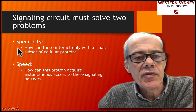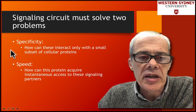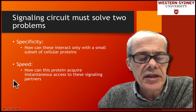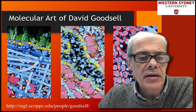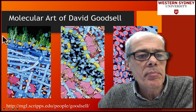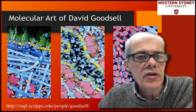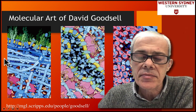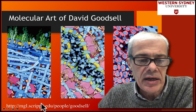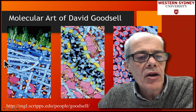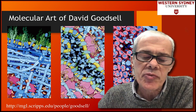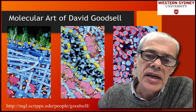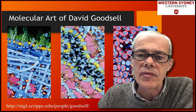There are two problems that need to be solved: one is specificity — particular protein-protein interactions need to occur in a very specific way — and the other is how these signals interact with their partners in a timely fashion. A good way to think about how cells function is to look at the molecular art of David Goodsell, who is involved with the Protein Data Bank and works at Scripps. He has taken biological data on expression levels and relative sizes of proteins to visualize how busy the inside of a cell actually is.